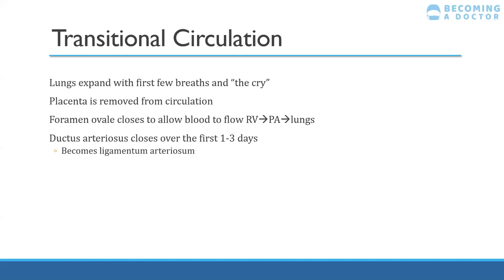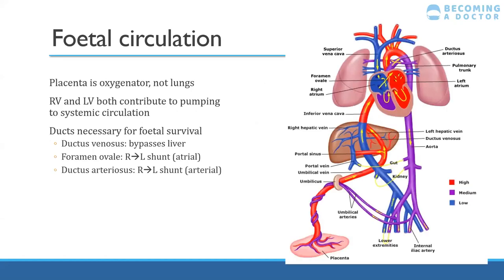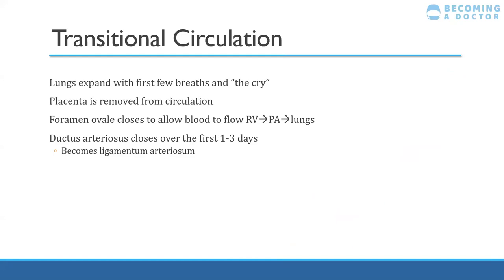The foramen ovale closes — it's between the two atria, the right and left atria, which allows for some mixing of blood. Once the foramen ovale closes, there's no blood flowing from the right atrium into the left atrium, so blood goes from the SVC through the right atrium, right ventricle, pulmonary artery, into the lungs to be oxygenated — like in an adult. The ductus arteriosus, between the pulmonary artery and aorta, closes over the first one to three days and becomes the ligamentum arteriosum.